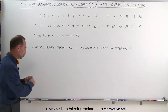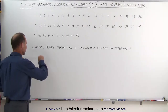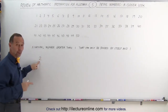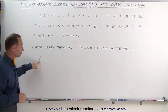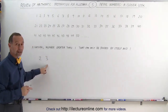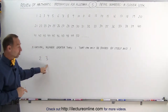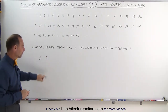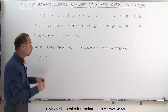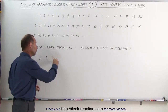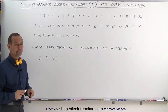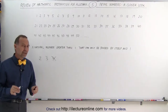For example, the number 2 can only be divided by one and itself. The number 3 can only be divided by one and itself. But the number 4 can also be divided by 2, so the number 4 is not a prime number. That's the definition.